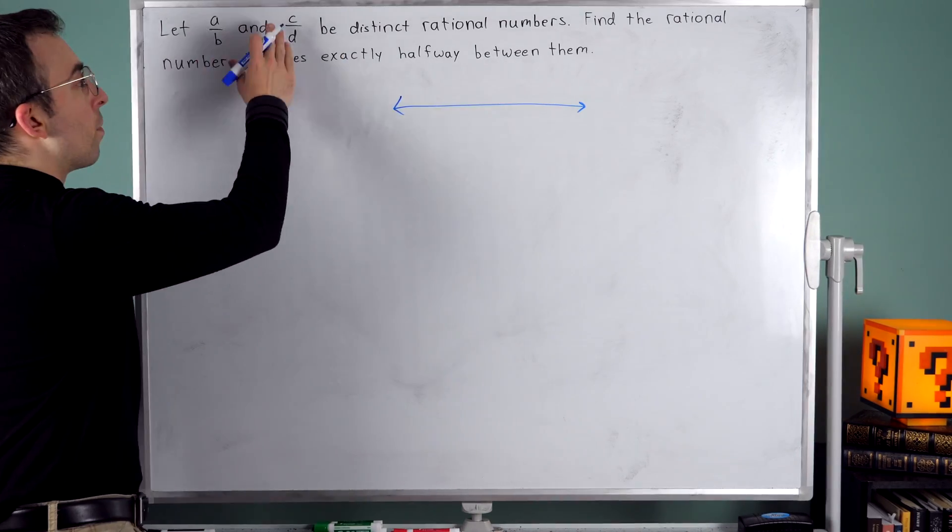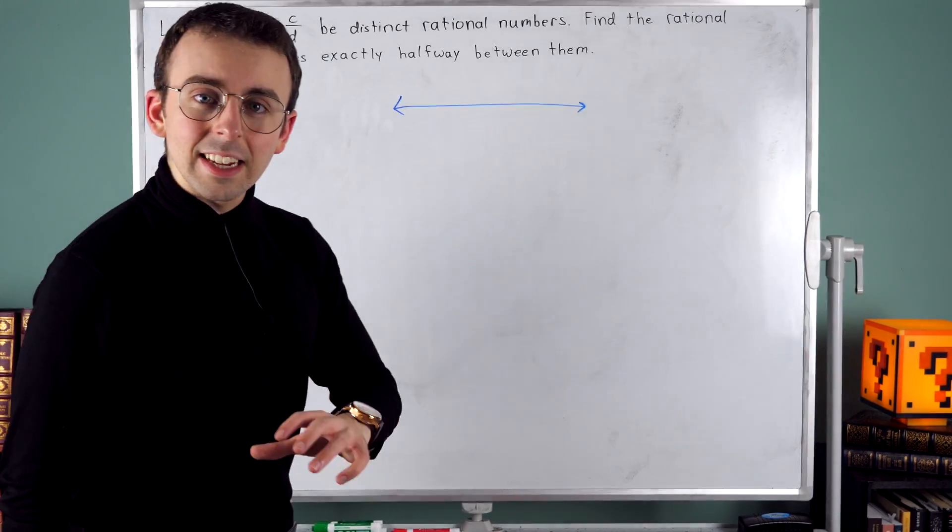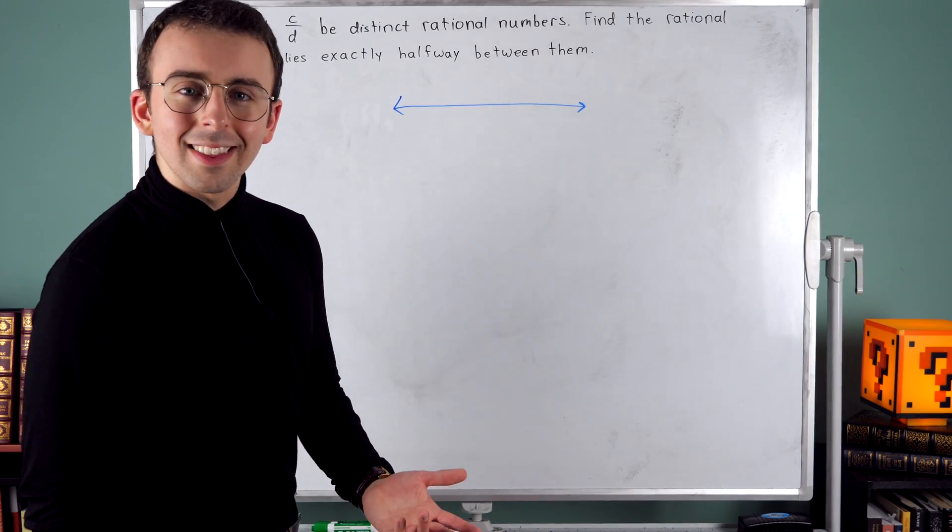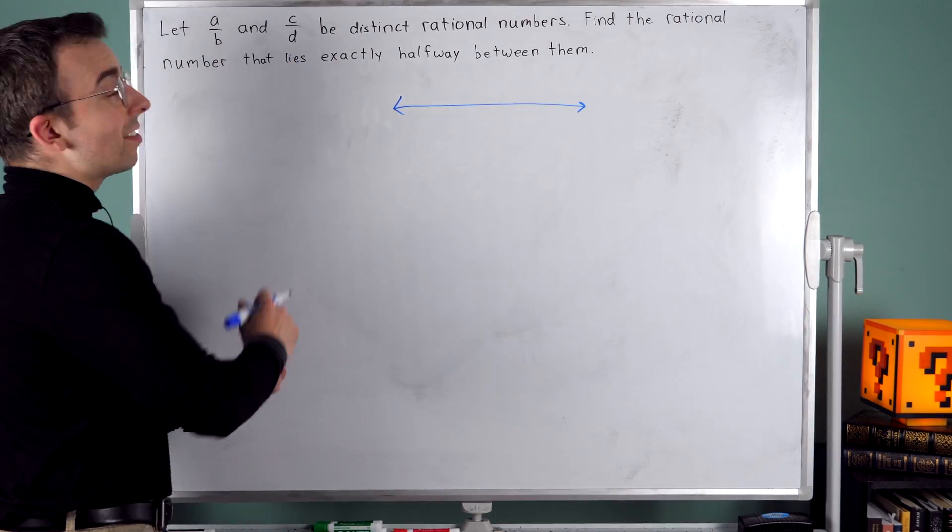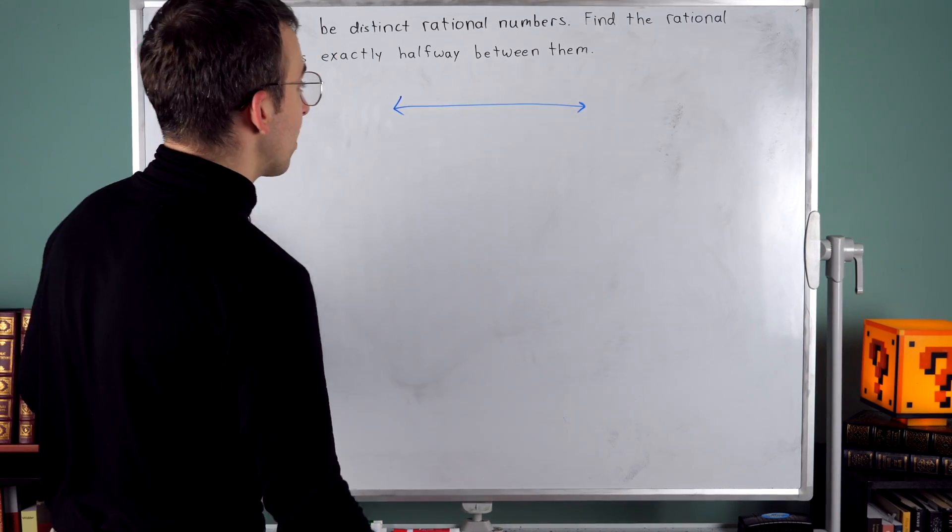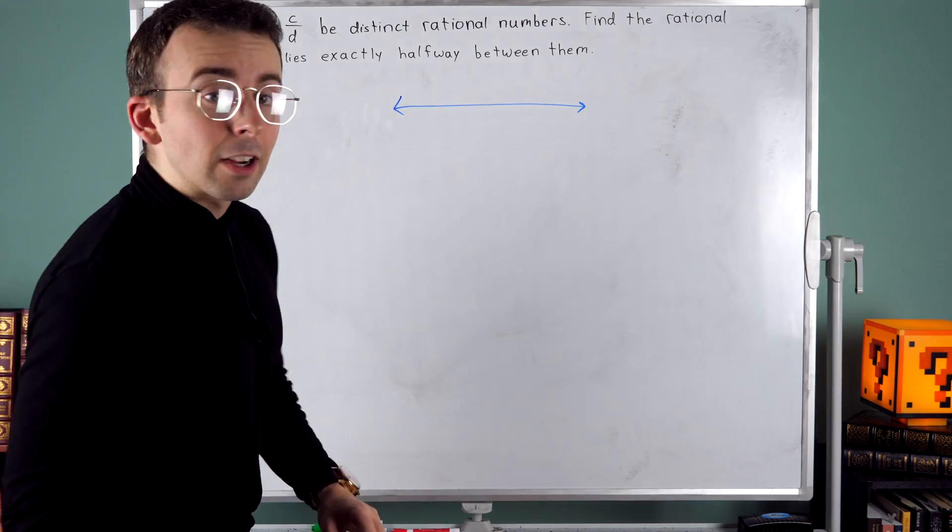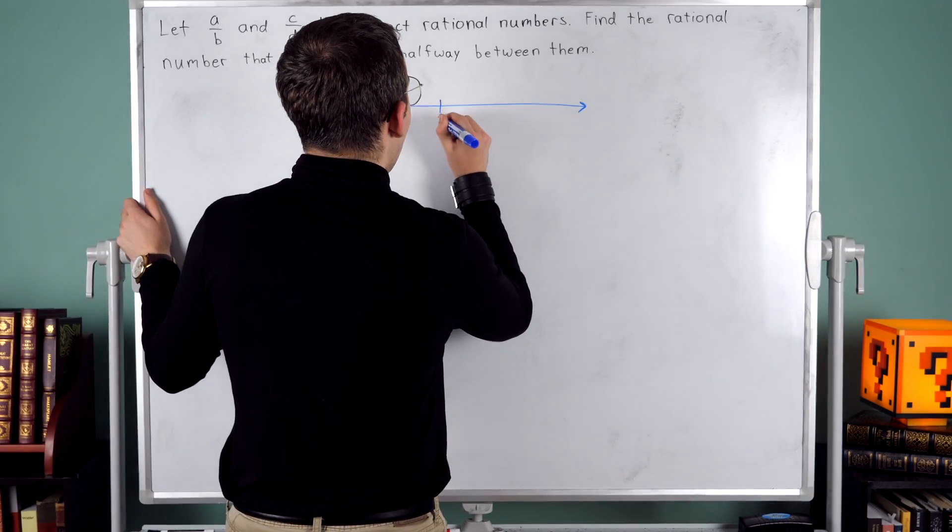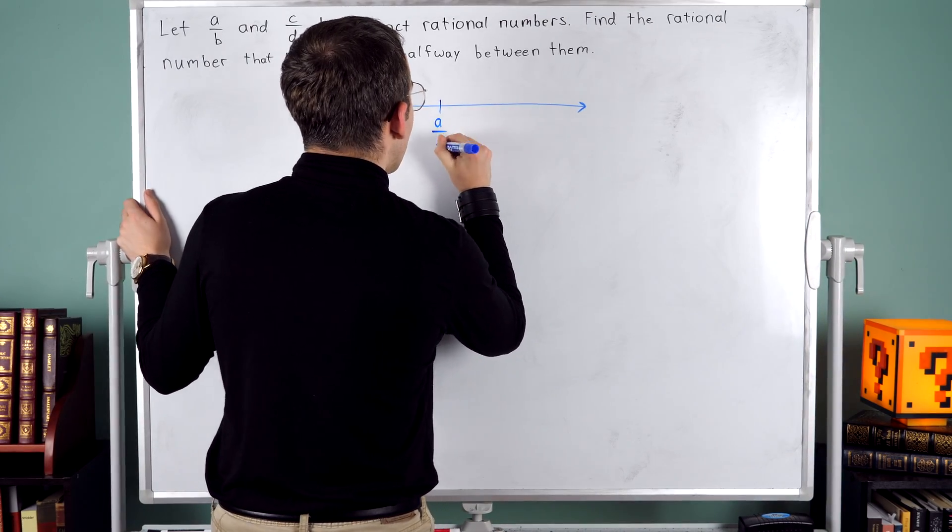Since A over B and C over D are distinct rational numbers, one has to be bigger than the other. Let's just assume that C over D is the bigger one. It doesn't really matter which is bigger, but that will help us make a picture.